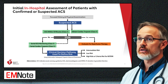Initial in-hospital assessment: Upon hospital arrival, a focused history and physical examination should be conducted along with serial cardiac troponin measurements. A 12-lead electrocardiogram should be repeated within 10 minutes to identify evolving ischemia. Serial measurements of cardiac troponins help classify patients into low, intermediate, or high-risk categories using clinical decision pathways, ensuring timely risk stratification and appropriate management.